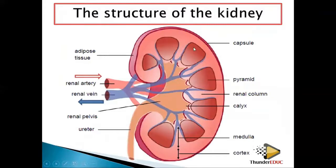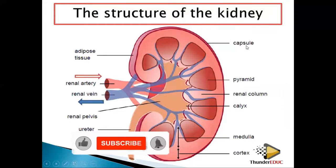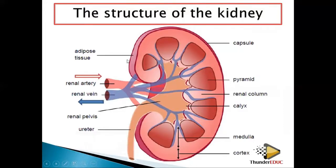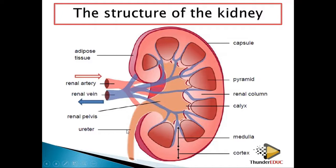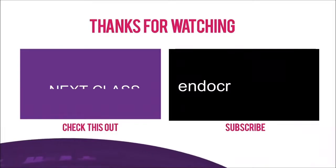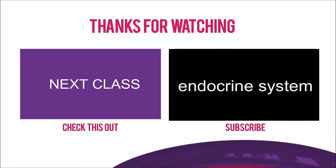Looking at the structure of the kidney: the outer layer is the renal capsule, and the adipose tissue surrounds it externally providing protection. The renal artery brings blood into the kidney and the renal vein takes blood out. The functional unit of the kidney is found in the inner area. Once blood is purified, it is collected and brought to the renal pelvis, then passes to the ureter, then the bladder, then the urethra, and out of the body. The functional unit of the kidney is called the nephron.